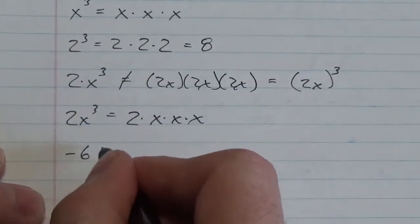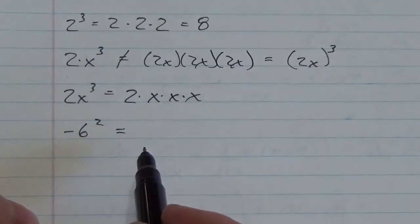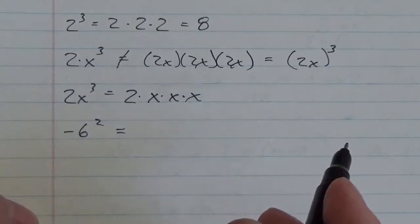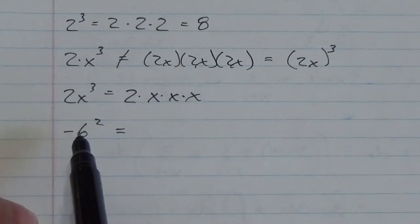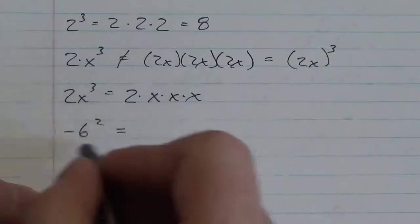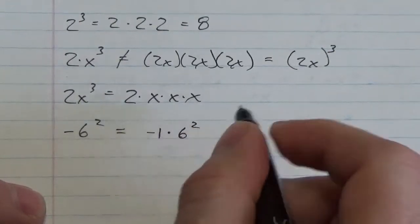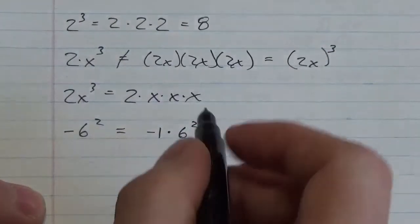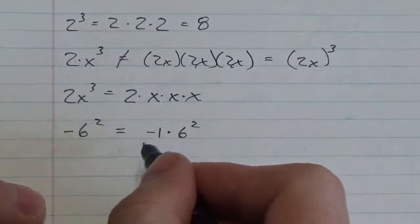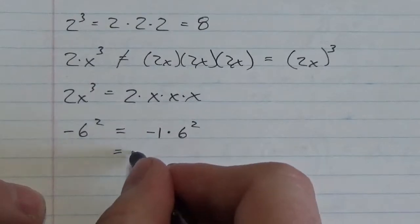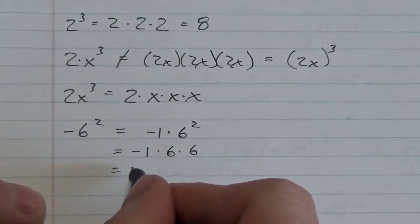If I go negative 6 squared, very often people will do this without even thinking about it and they'll just give me the answer is 36. The answer isn't 36 here. I have to do the square first. This expression the way it's written right here is really the same as negative 1 multiplied by 6 squared. So I have to do the exponent first, because the exponent only applies to the 6, not the negative 1 there. So this is going to be the same as negative 1 multiplied by 6 multiplied by 6. There's two factors of 6 here, and so this actually gets you negative 36.